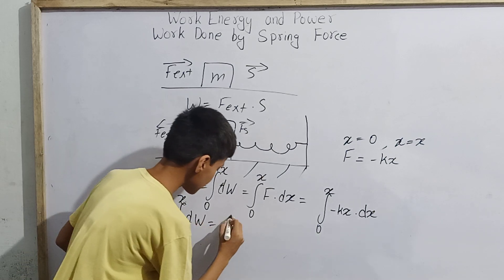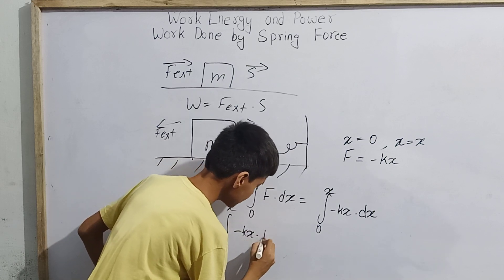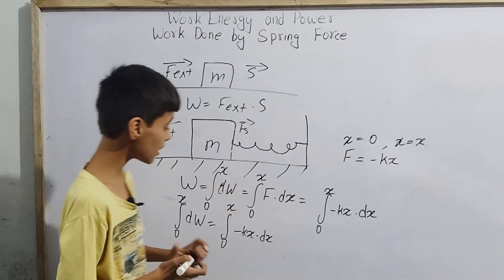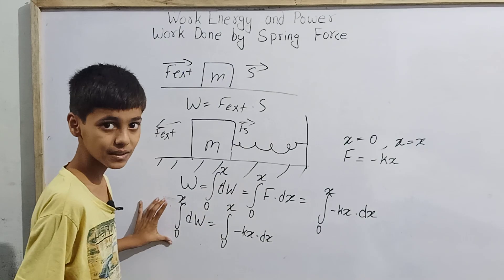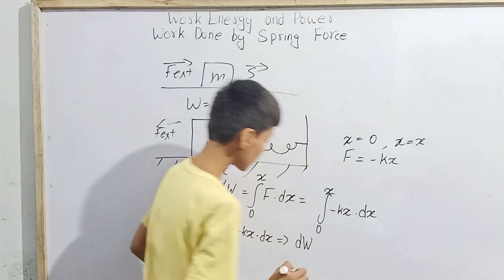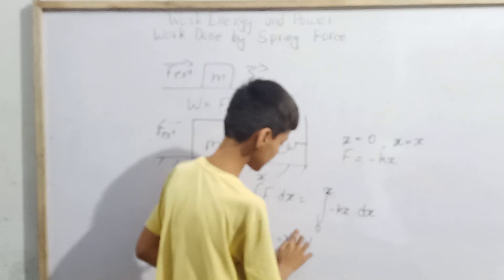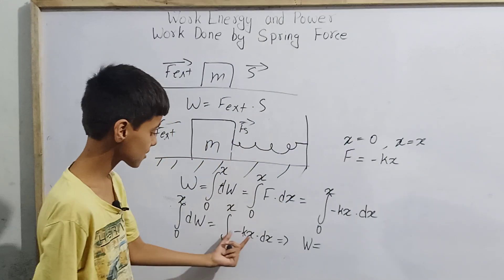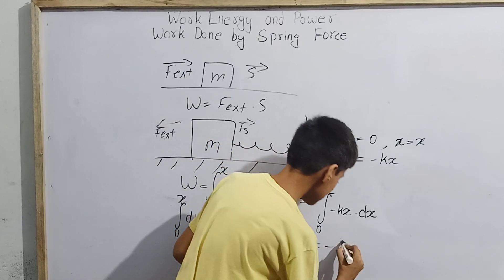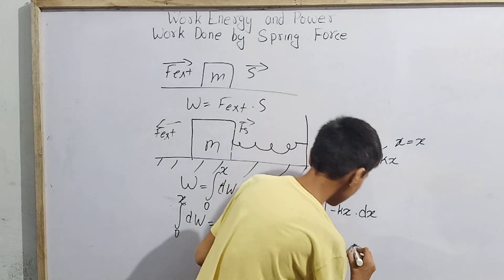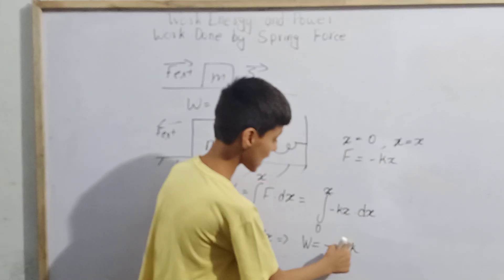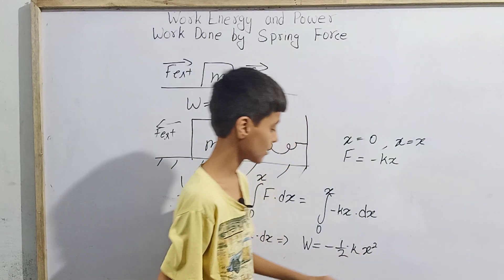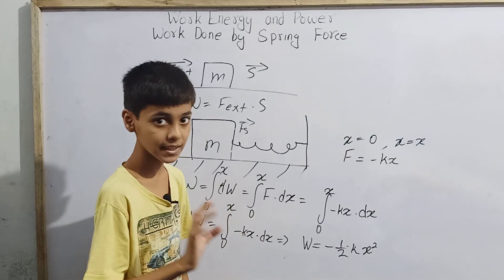Solving this integral: integrating -kx · dx from 0 to x gives us W = -½kx². This is the work done by a spring force when the displacement goes from 0 to x.